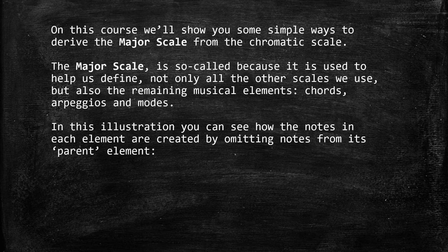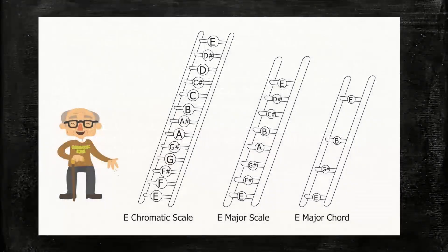On this course we'll show you some simple ways to derive the major scale from the chromatic scale. The major scale is so called because it is used to help us define not only all the other scales we use, but also the remaining musical elements: chords, arpeggios, and modes. In this illustration you can see how the notes in each element are created by omitting notes from its parent element, the chromatic scale.